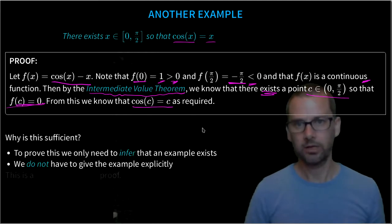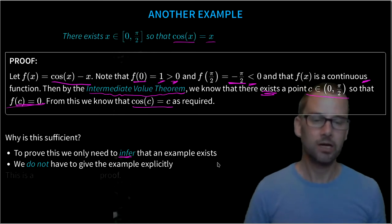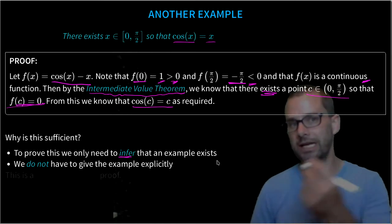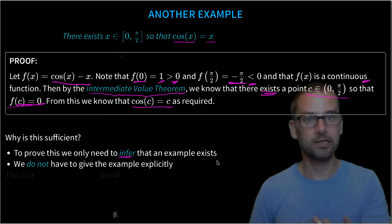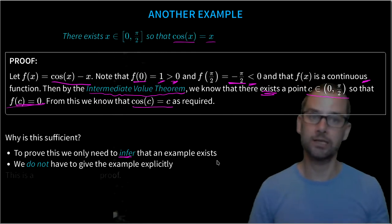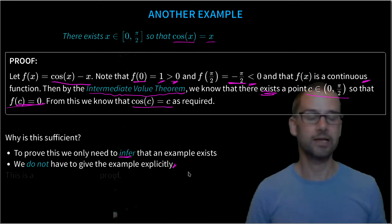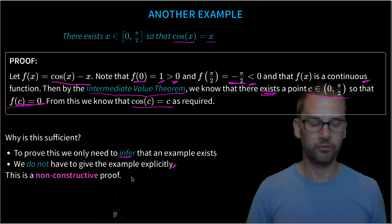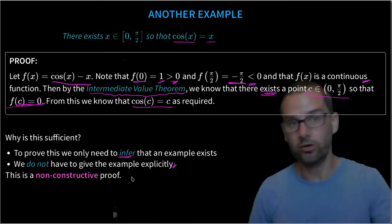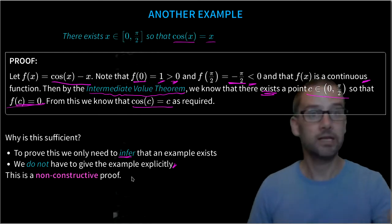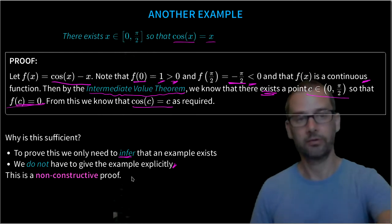Why is this sufficient? To prove this statement, we only need to infer that an example exists. The intermediate value theorem doesn't give us that example. It doesn't tell us what the value of c is, but it tells us that it exists. So we don't need to give that example explicitly. So this is an example of a non-constructive proof. We infer that something exists, but we don't tell you what it is. But it's sufficient to prove the result.